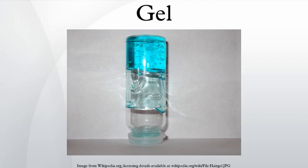Virtually any fluid can be used as an extender including water, oil, and air. Both by weight and volume, gels are mostly fluid in composition and thus exhibit densities similar to those of their constituent liquids. Edible jelly is a common example of a hydrogel and has approximately the density of water.